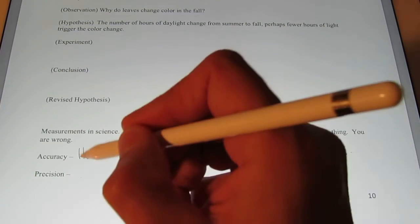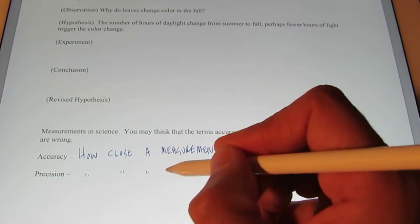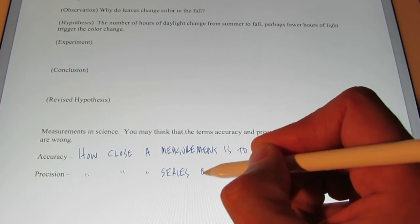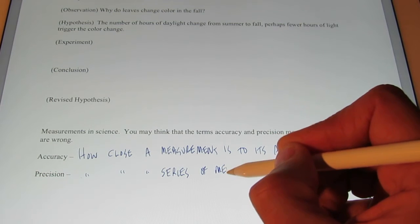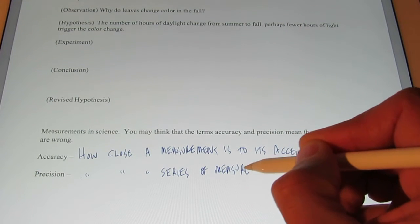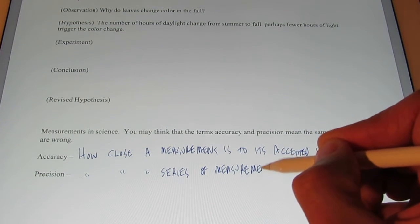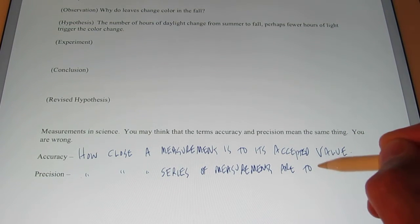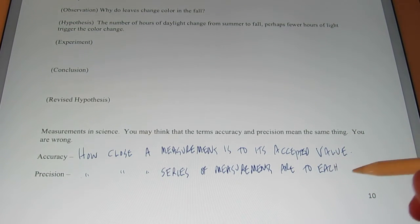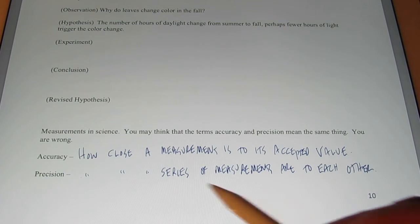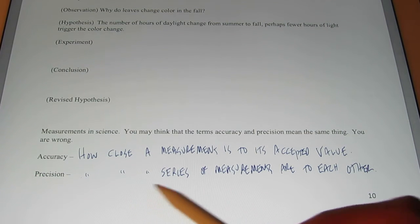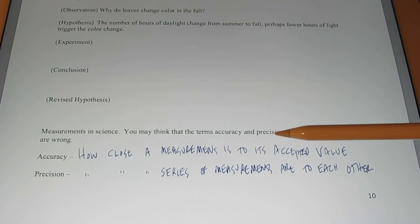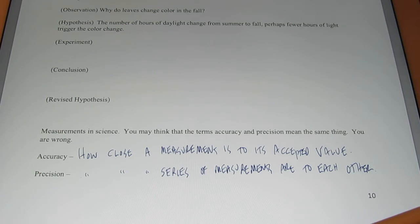Precision is how close a series of measurements are to each other. So precision, once again, how close a series of measurements are to each other. Accuracy, how close a measurement is to its accepted value.